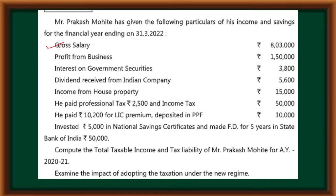Gross salary is given. Income from salary, profit from business, interest on government security, dividend — income from other sources, income from house property. So the combination is: income from salary, income from business, income from other sources. Capital gains I don't see. Income from house property. Got it?